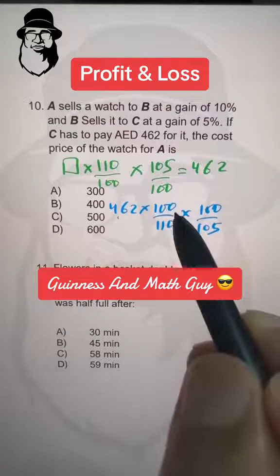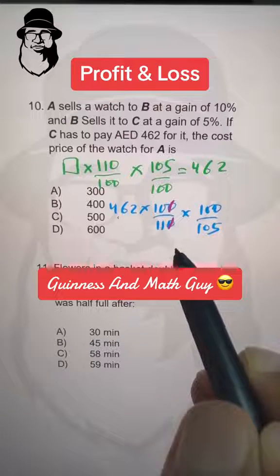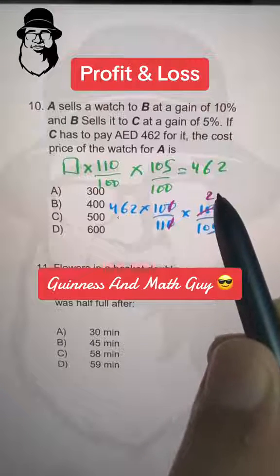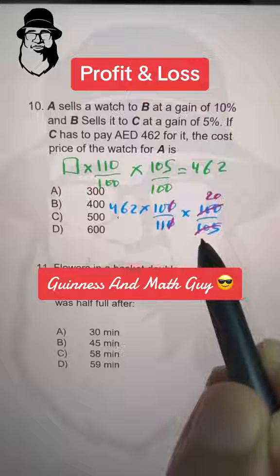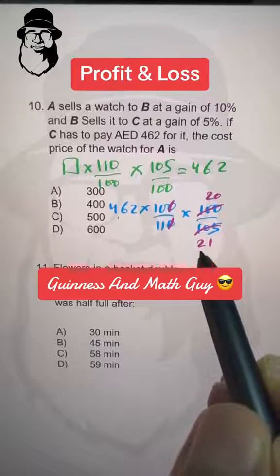Now we can cancel this 0 with this 0 and 5 times 20 is 100 and 5 times 21 is 105.